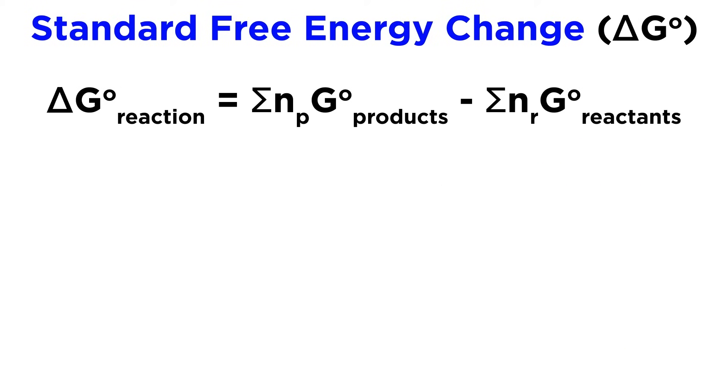Finally, we can use standard free energies of formation for the individual substances in the reaction to find delta G, just the way we use standard enthalpies of formation to find delta H. We have tabulated data, and we take the sum of the delta G values of the products and subtract from that the sum of the delta G values of the reactants, taking stoichiometry into account.